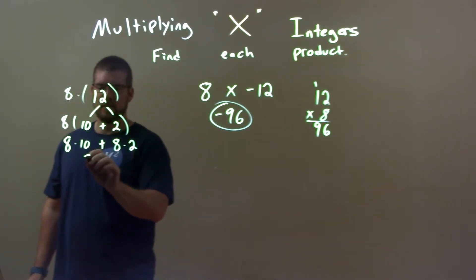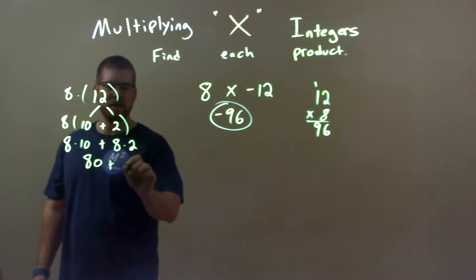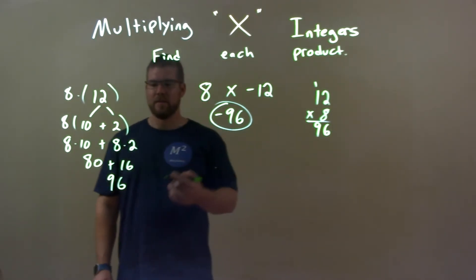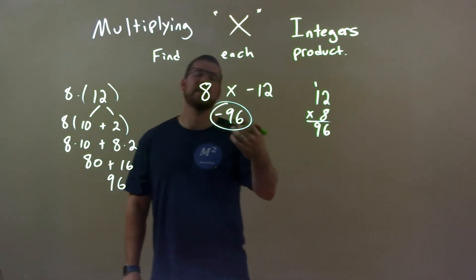Distributing that in, well 8 times 10 is 80, and 8 times 2 is 16. Adding them together, we have a 96. So that's how we also can get there. Now again, we know it was negative, so it's a negative 96.